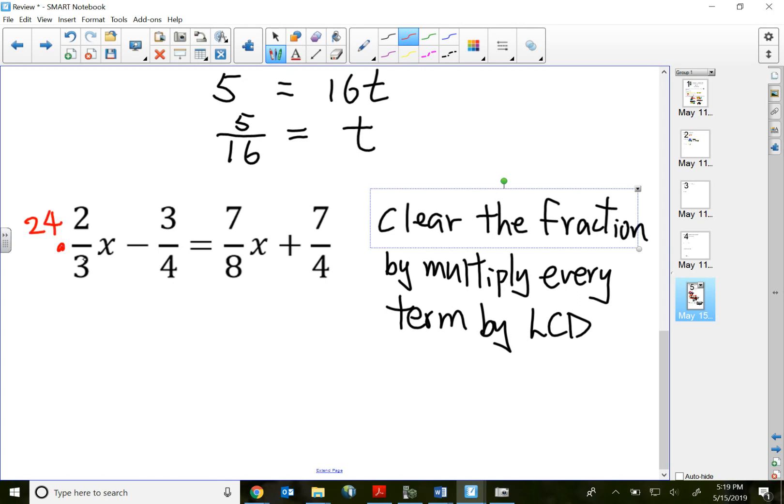For my first term times by the LCD 24, that 24 means 24 over 1, so that instantly puts the 24 on the top. What it does here is the 24 and the 3 will cancel out, so that leaves me with just 1 in the denominator and that gives me 8 on top.